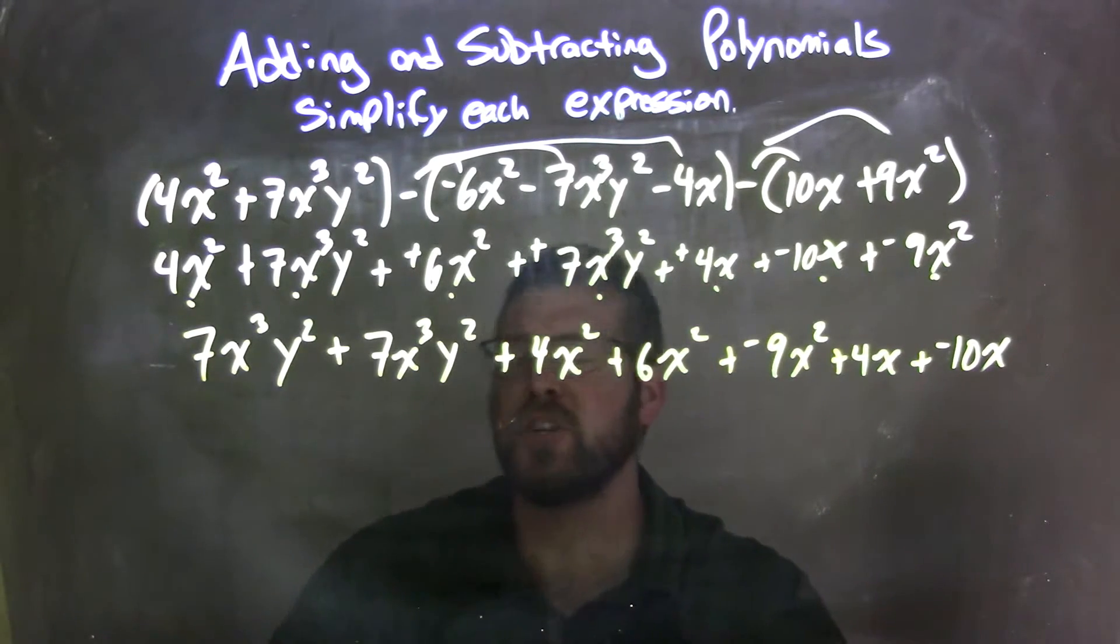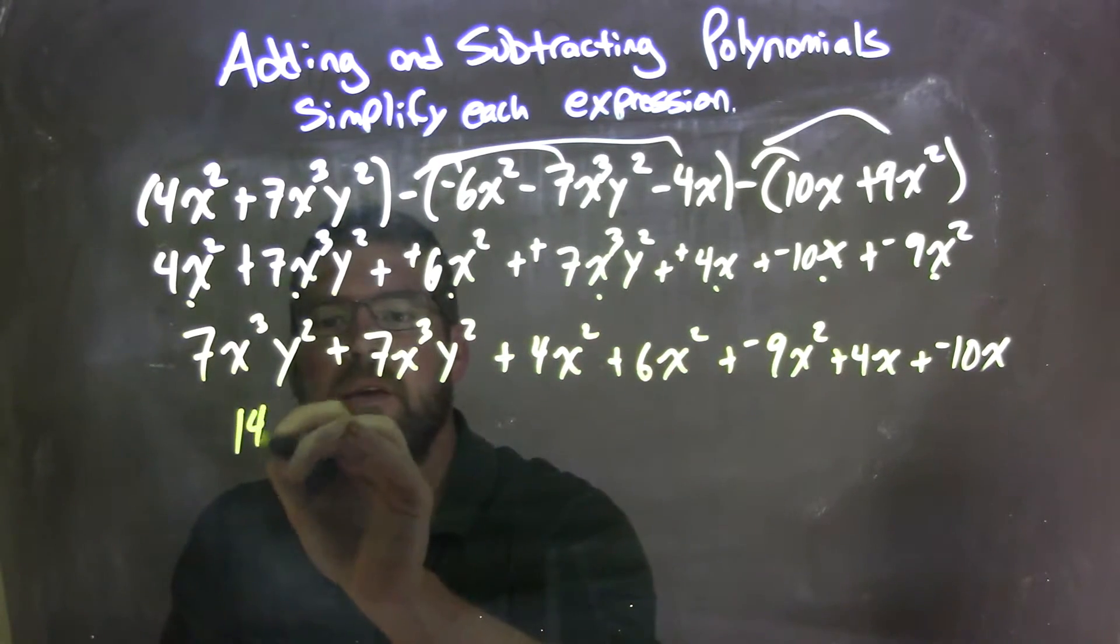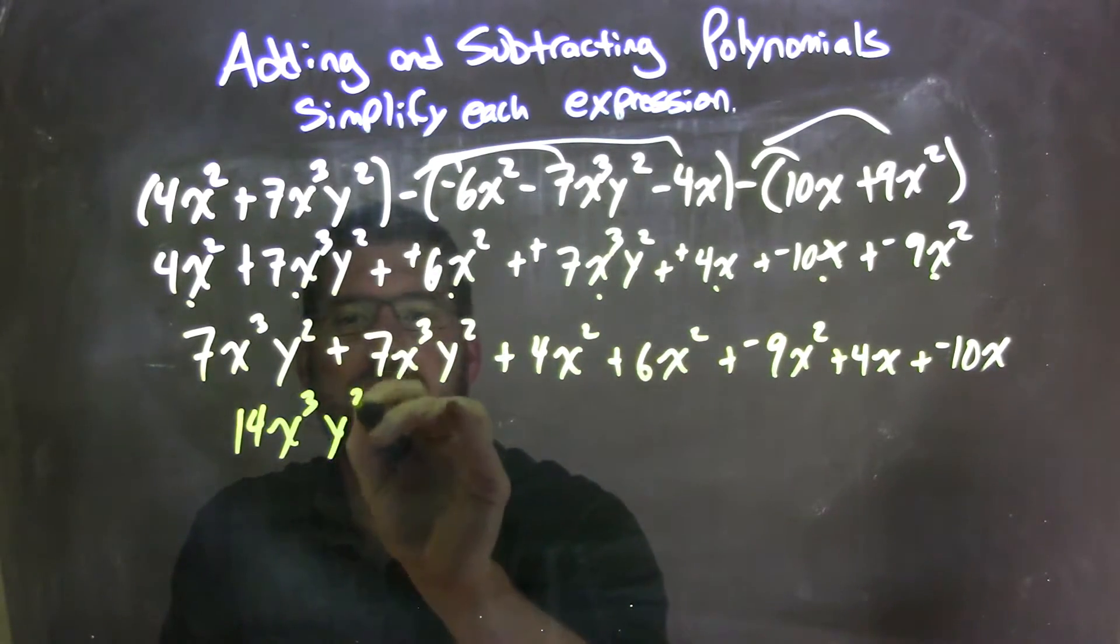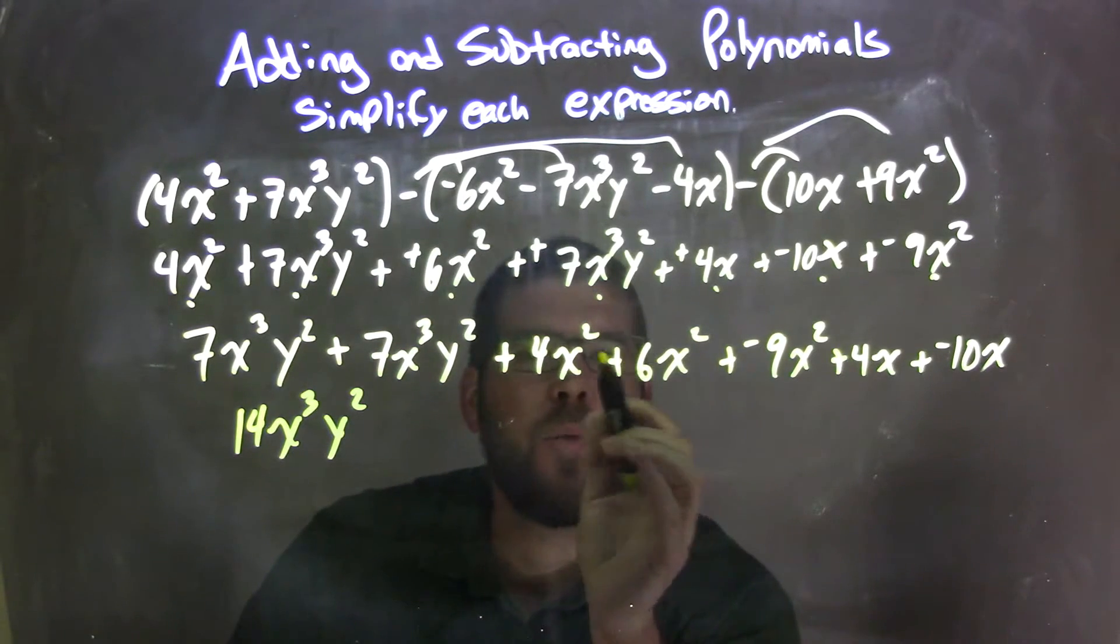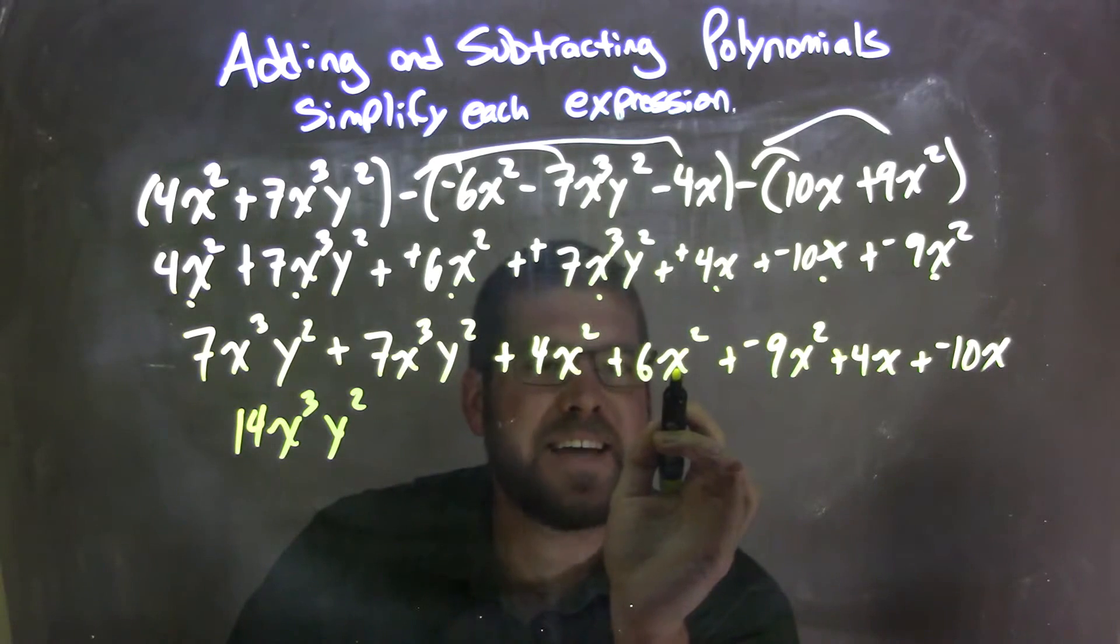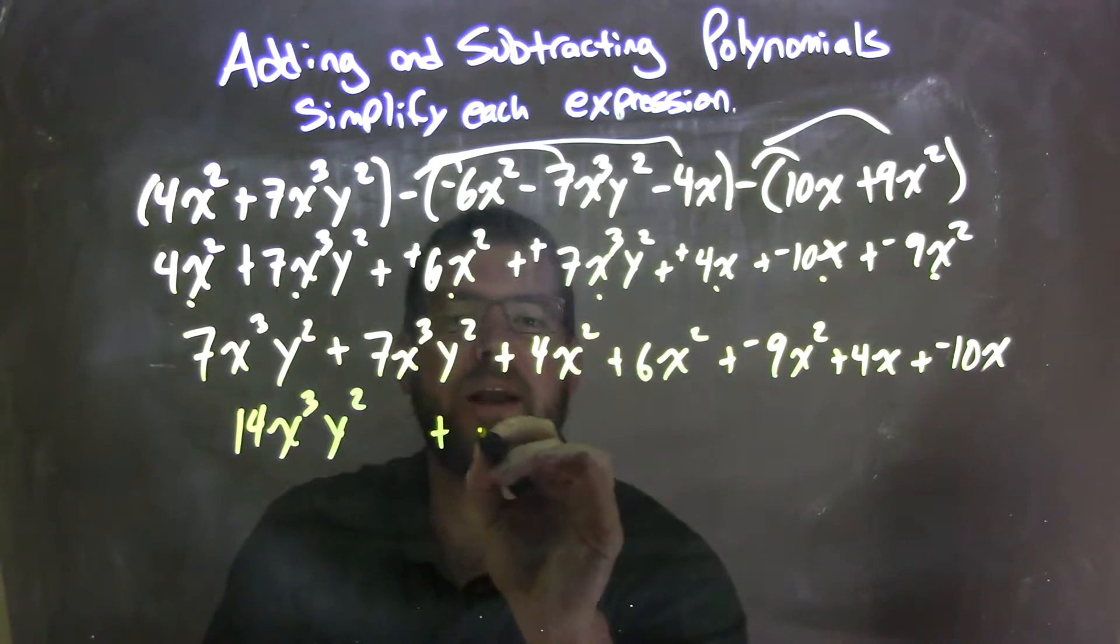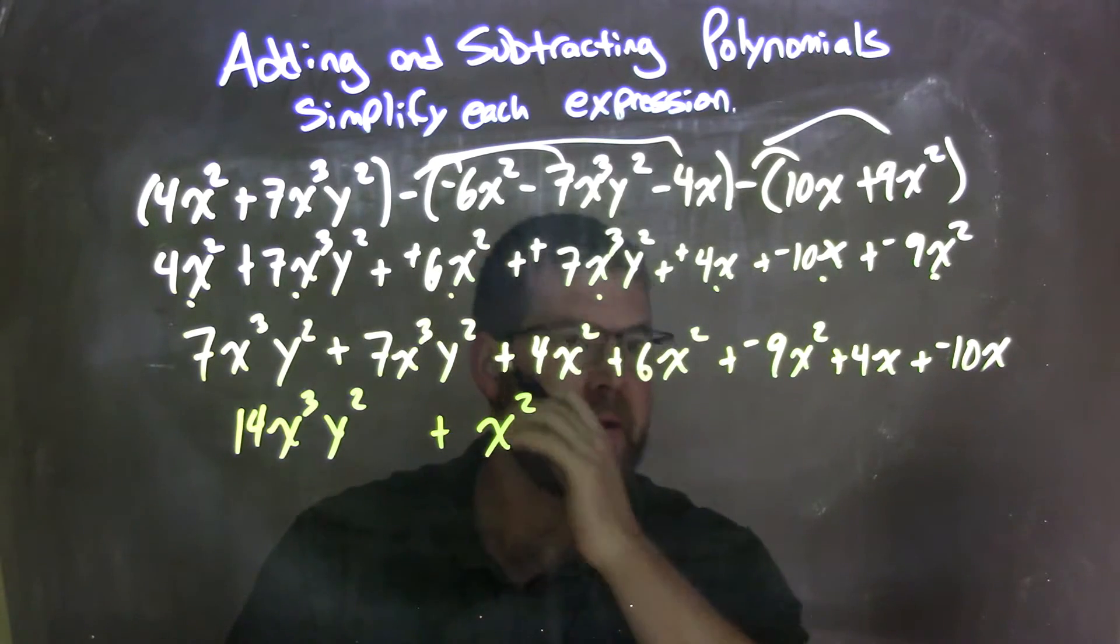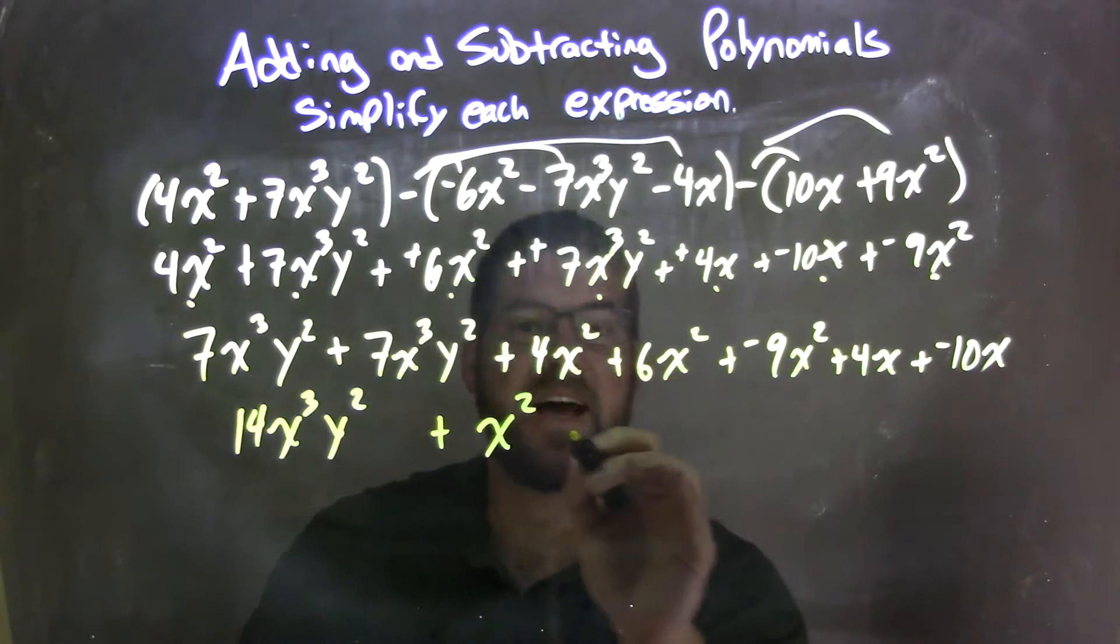Now I'm going to combine my like terms. 7x to the third y squared plus 7x to the third y squared is 14x to the third y squared. Then we combine our x squareds together. 4x squared plus 6x squared is 10x squared, plus a negative 9x squared is just a positive 1x squared. Then we have 4x plus a negative 10x, and that's a negative 6x.